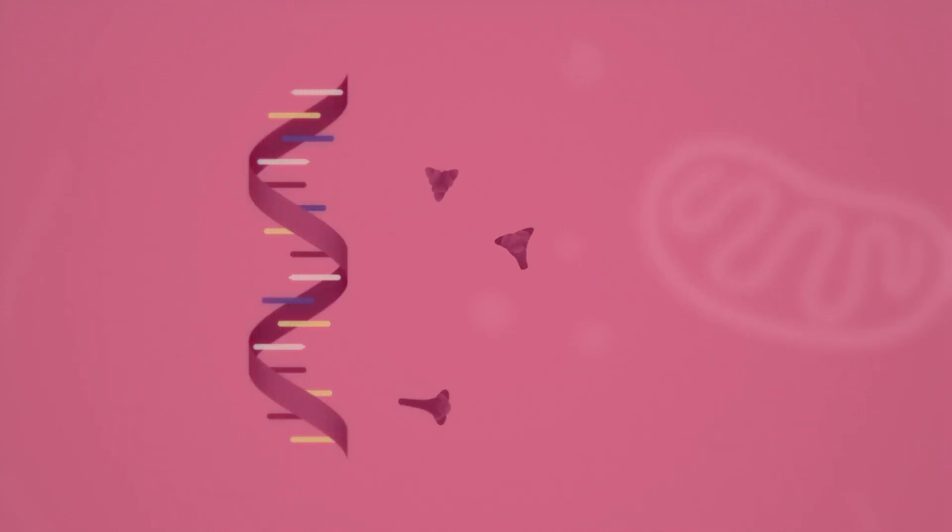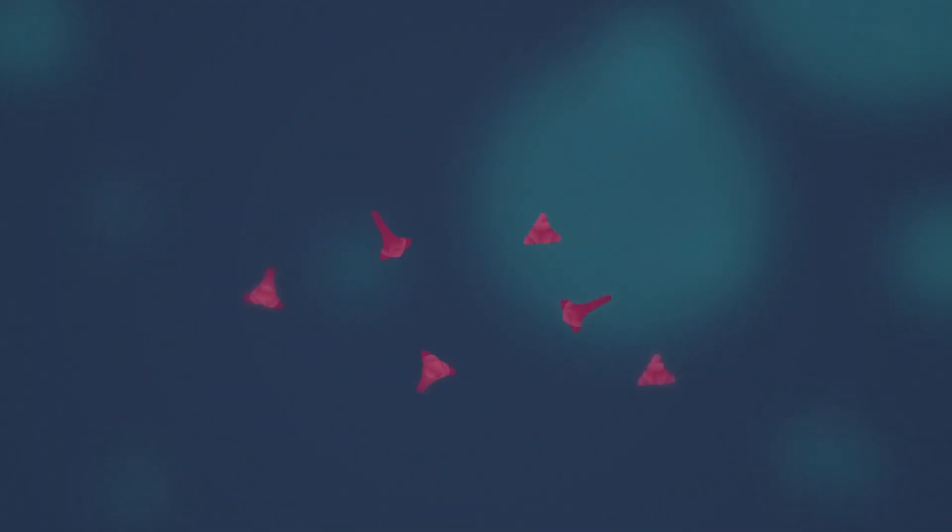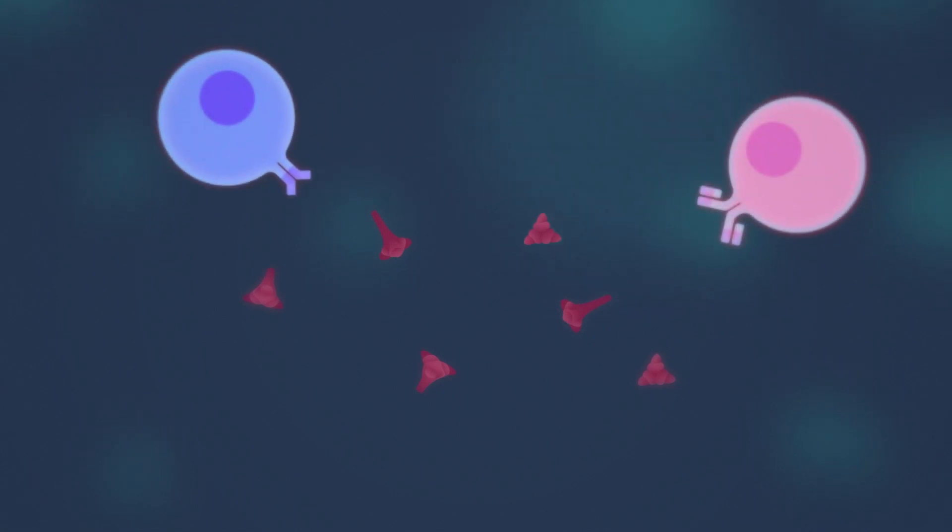When the cell dies naturally, the spike proteins are found by the immune system and it begins to build the manufacturing process for new antibodies.